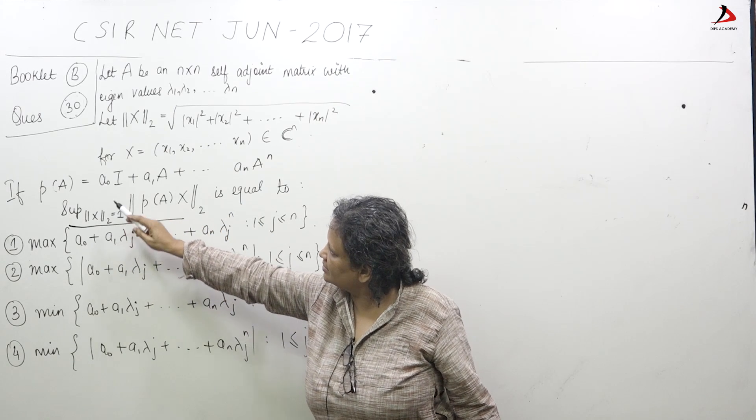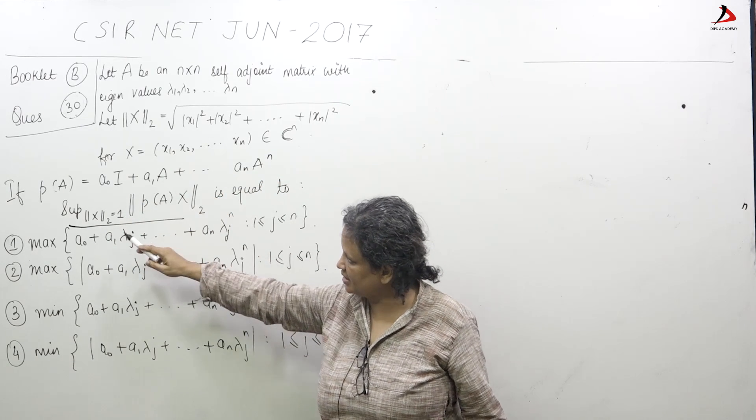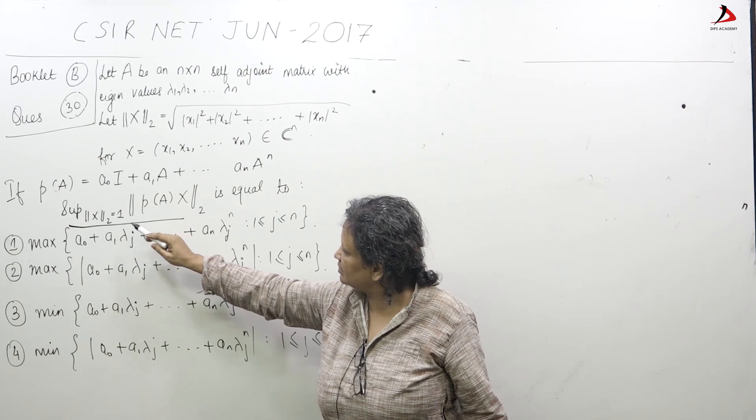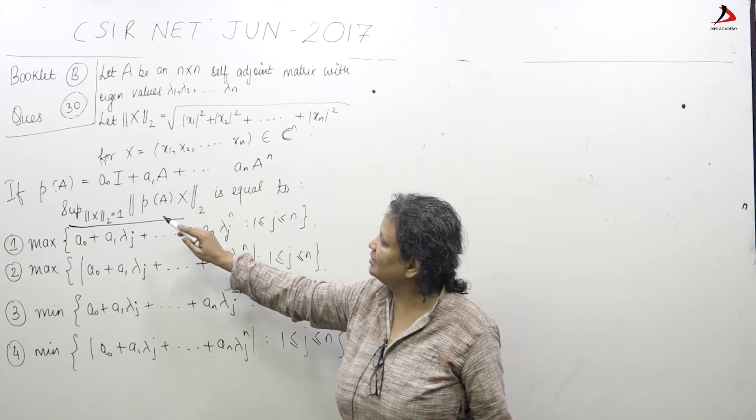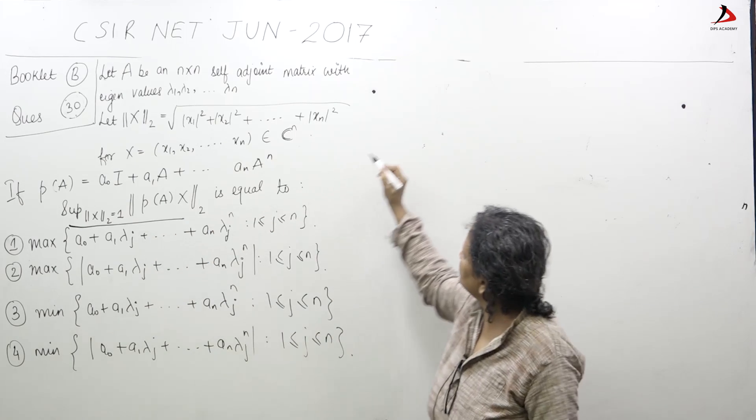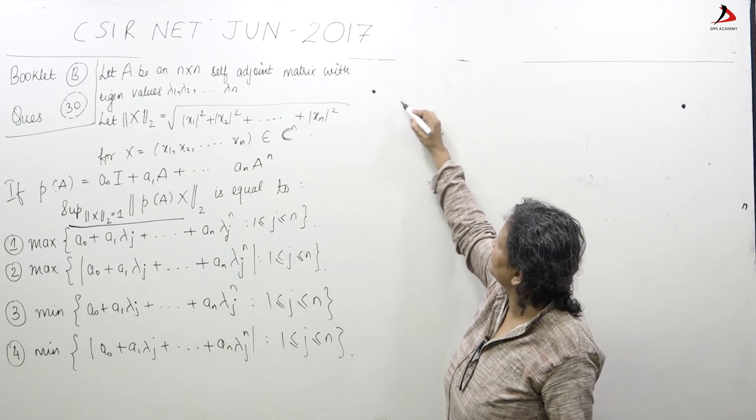It is asked that P of A is a polynomial in A. The question is to find out the supremum of all these things, and now this is actually the operator norm of P of A.